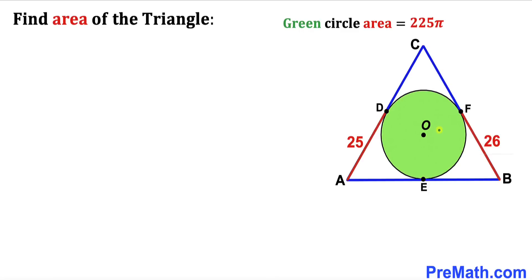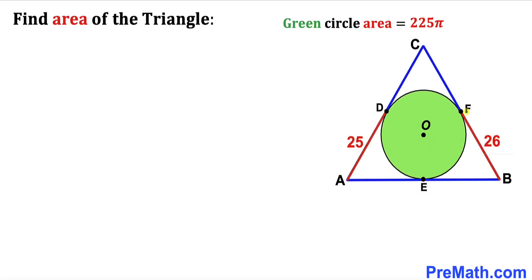Welcome to pre-math. In this video, we have a green shaded circle with center O fully inscribed in triangle ABC, such that points D, E, and F are the points of tangency. Segment AD is 25 units, segment BF is 26 units, and the area of this green circle is 225π square units. Our task is to calculate the area of triangle ABC.